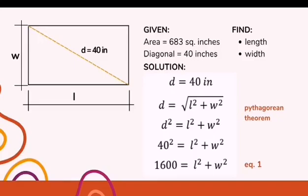So first thing to do is gamitin natin siya ng Pythagorean theorem. From the given d equals 40 inches, d equals square root of length squared plus width squared. d squared equals length squared plus width squared. 40 squared equals length squared plus width squared. So this is our equation number 1.